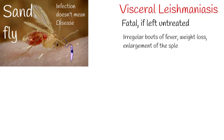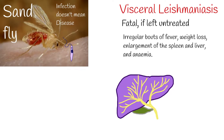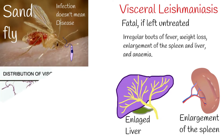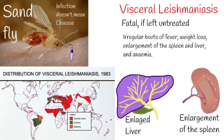Signs and Symptoms: Visceral leishmaniasis, also known as kala-azar, is fatal if left untreated. It is characterized by irregular bouts of fever, weight loss, enlargement of the spleen and liver, and anemia. Most cases occur in Brazil, East Africa, and India.